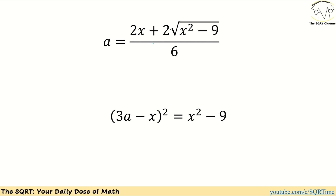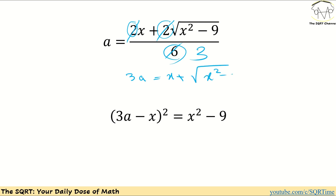We found that a equals that fraction. We have 6 in the denominator and a factor of 2 in the numerator, so we can simplify. We can write that 3a = x + √(x²-9). Rearranging, we get 3a - x = √(x²-9).